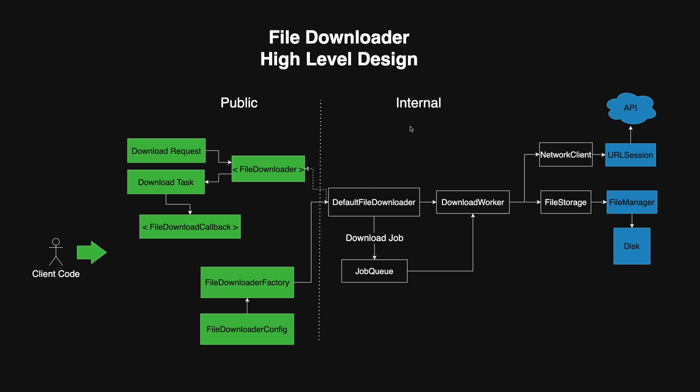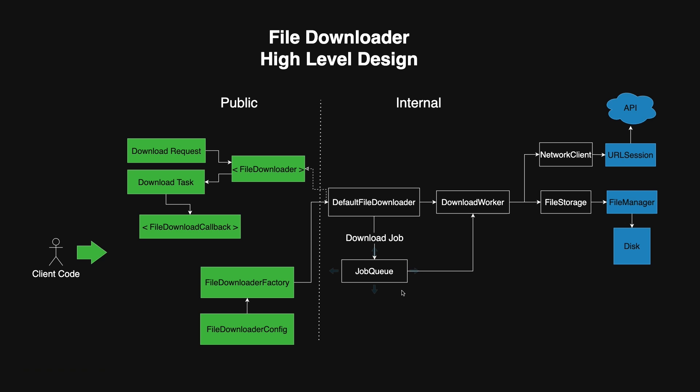Let's talk about the internal implementation of the file downloader. DefaultFileDownloader takes in a download request and returns a download task as a client-facing object, but also creates an internal representation for the same data: the download job. Inside DefaultFileDownloader, the job queue is responsible for managing and coordinating the execution of download jobs. It ensures that the number of concurrent downloads doesn't exceed the configured limit, and handles scheduling, retries, and job prioritization. Internally, it uses a thread-safe dispatch queue — typically a concurrent queue with synchronization mechanisms — to manage state transitions and prevent race conditions, keeping track of active and pending jobs and starting new ones when slots become available.